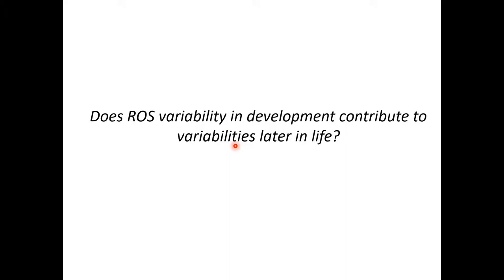In other words, if aging is subject to stochasticity, can these early ROS variations contribute to this stochasticity?